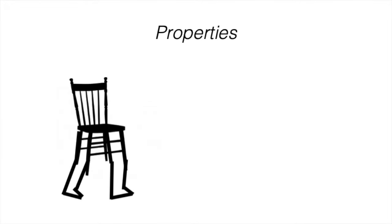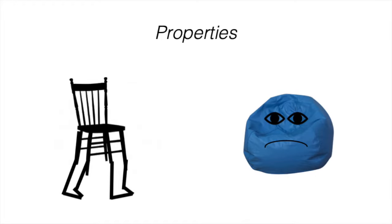Our second ingredient, properties, describe the attributes that classes have. So one of the properties of a chair might be that it has legs, and this property differentiates it from a bean bag which has no legs. Color or size could also be properties of a chair, and properties could describe both the values of a class as well as the relationships a class has with another class.